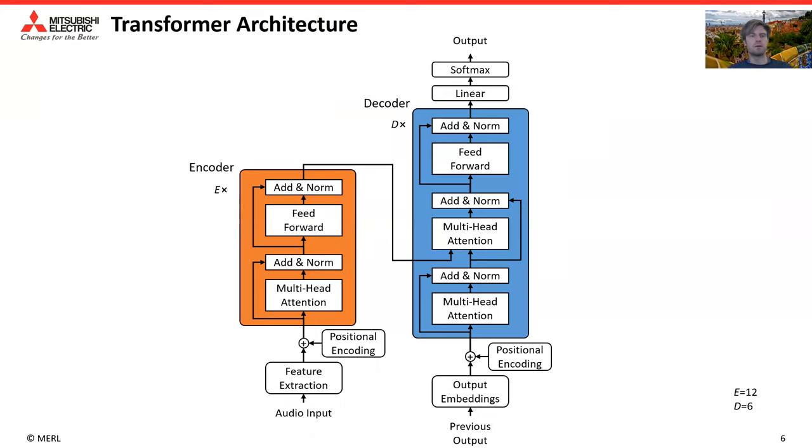Here, the transformer architecture is shown. The orange box is the encoder block, and the blue box is the decoder block. They get repeated E or D times. I won't go into all the details of this architecture, but instead I will only focus on the attention mechanisms. We have an encoder-decoder attention block, and here we have self-attention blocks. The attention blocks of the transformer architecture are responsible for processing temporal information, and that's why we will look at them now and see how we can make them streamable.